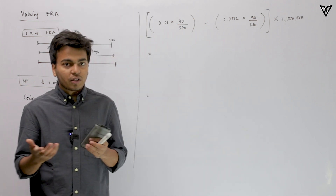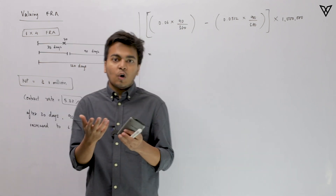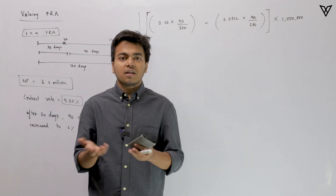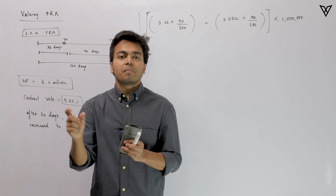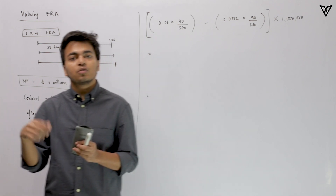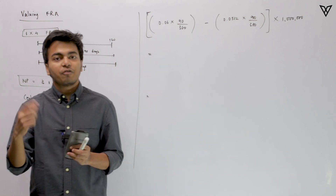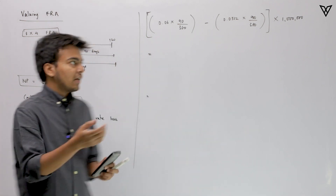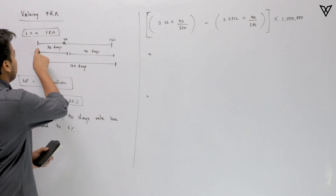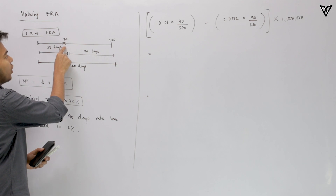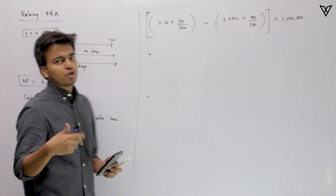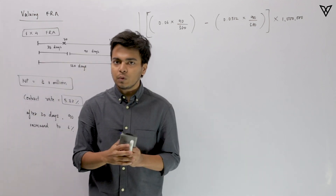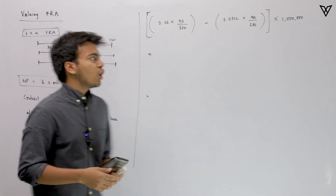To revise: the long party in an FRA is the party who agrees to borrow at a fixed pre-decided rate on a particular date for a given time period. The short party is agreeing to lend.